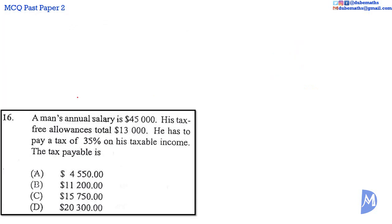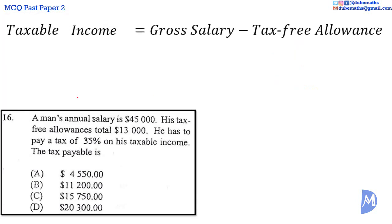Question 16. The taxable income is equal to the gross salary minus the tax-free allowance. The taxable income is equal to $45,000 subtract $13,000, which is equal to $32,000.